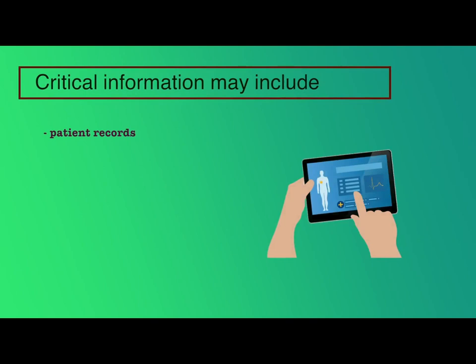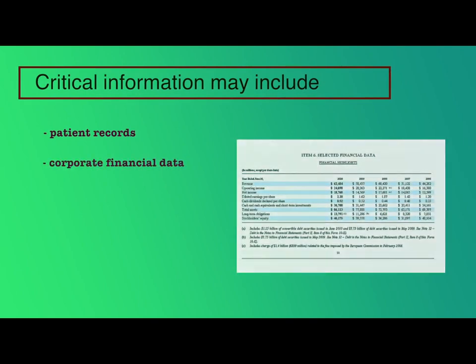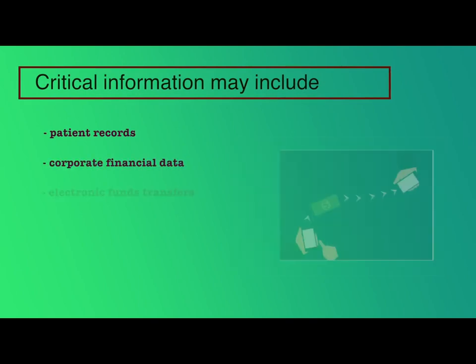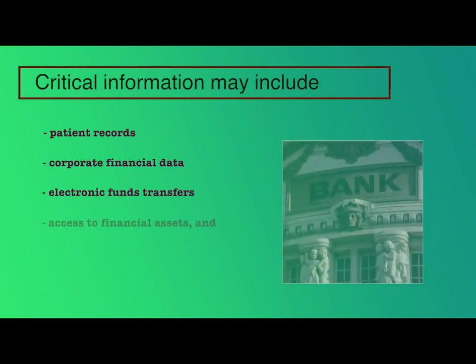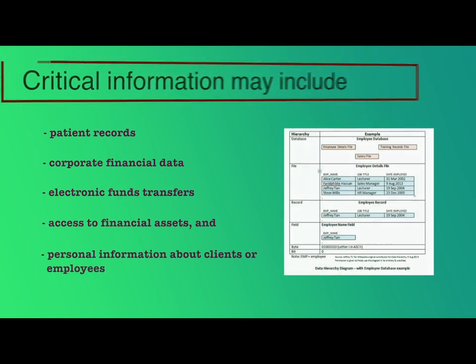Many organizations have information that has value that justifies expensive protection mechanisms. Critical information may include patient records, corporate financial data, electronic fund transfers, access to financial assets and personal information about clients or employees.